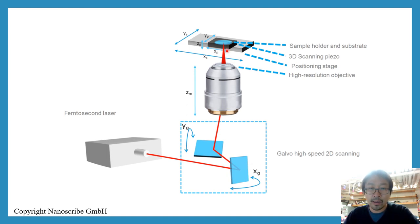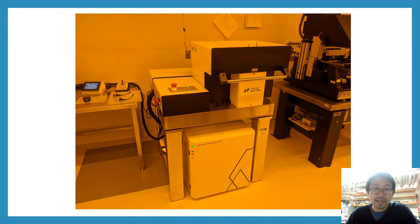The laser will be then focused onto the resin, and this resin together with the substrate can be moved around roughly by a positioning stage. In addition to the rough movement, a piezoelectric stage will be applied to do fine adjustment. This slide shows you the real life photo of the fancy 3D printer at MIT nano.